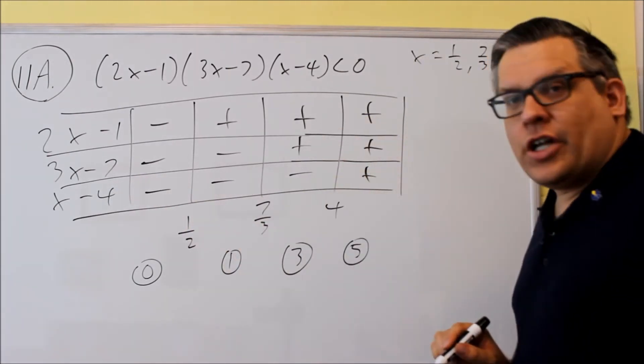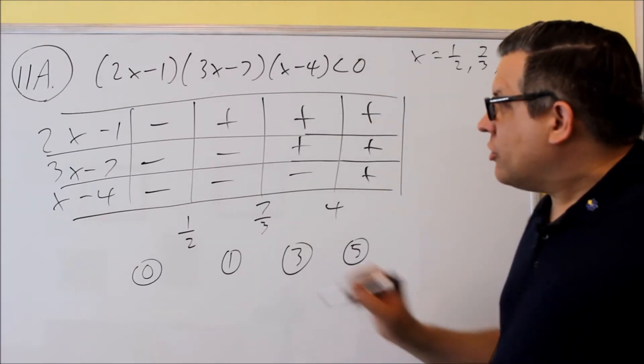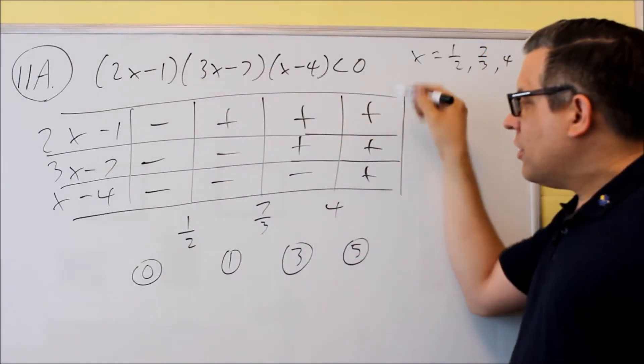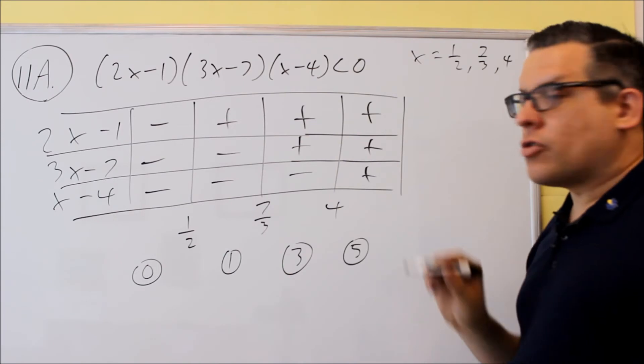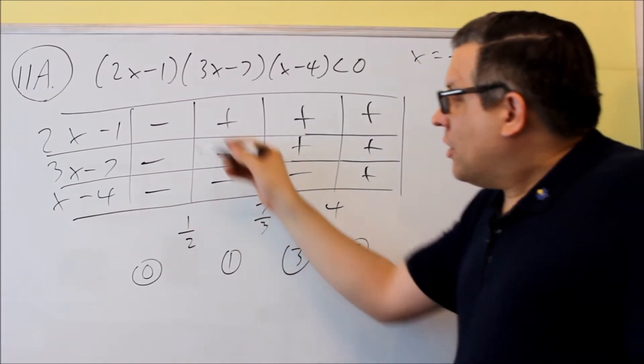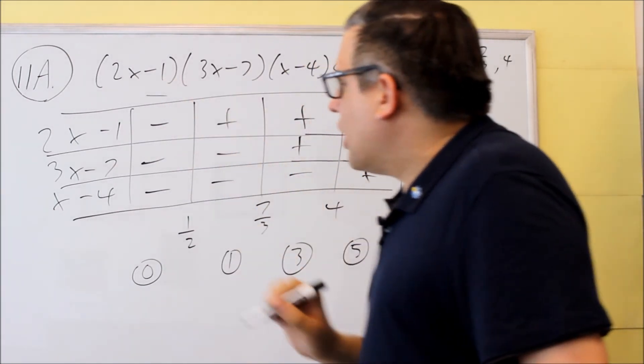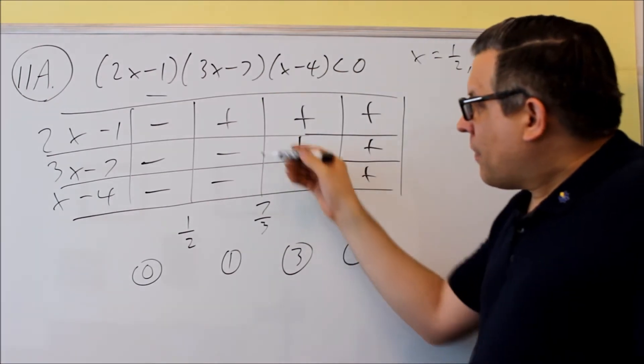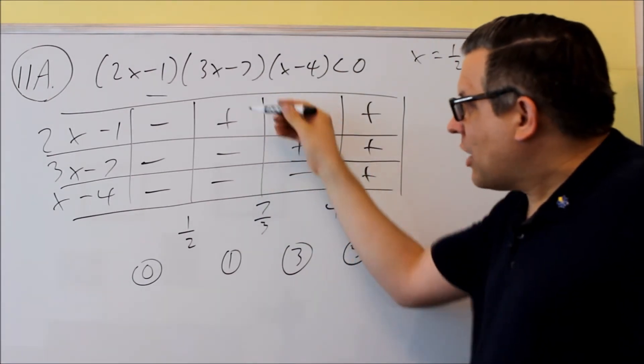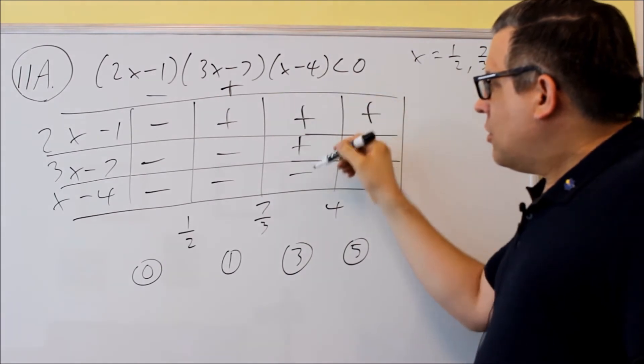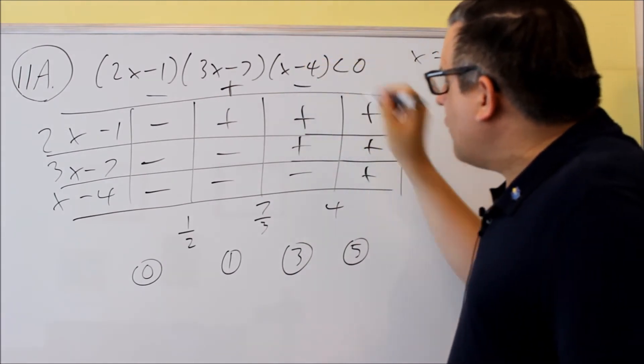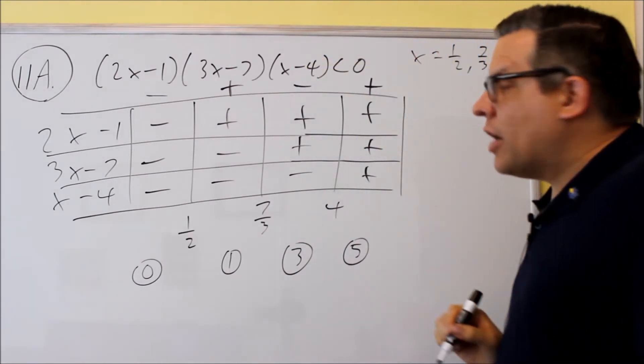Once you get the table complete, then what you're going to do is you're going to multiply down each of the columns, and we're going to put our answers across the top here. Three negatives will give you a negative as a result. Two negatives as a positive, times positive, you get a plus. You get a positive and a negative, that gives you a negative there, and then all positives you get a plus.